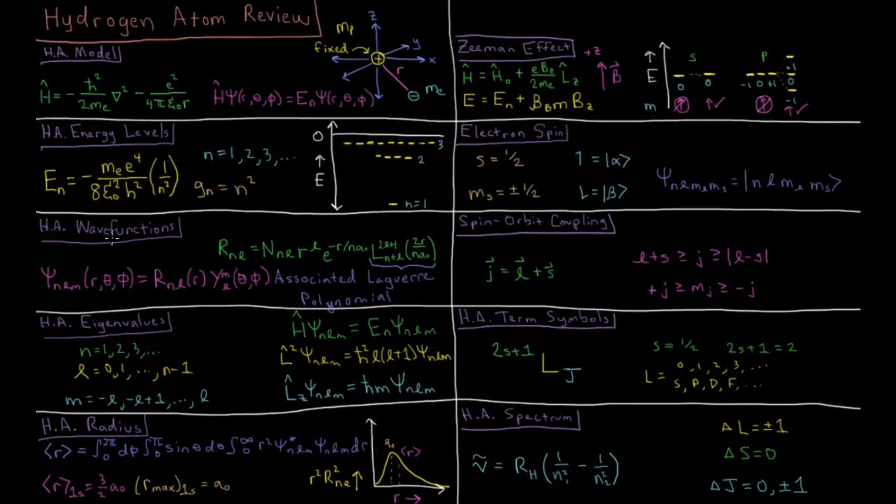The wave functions of the hydrogen atom can be broken down by separation of variables into a radial part depending on quantum numbers n and l, and an angular part depending on quantum numbers l and m. The angular part is the spherical harmonics, the same ones from the rigid rotor.